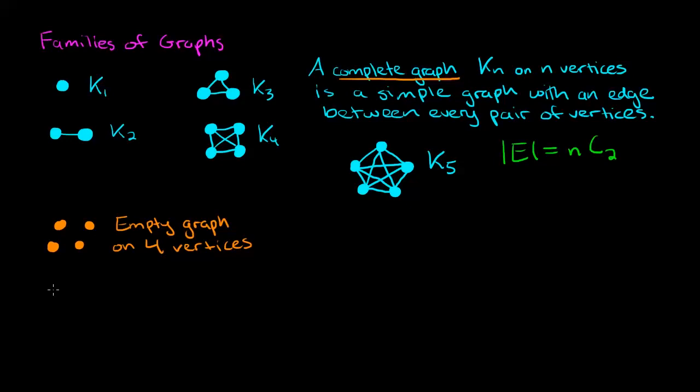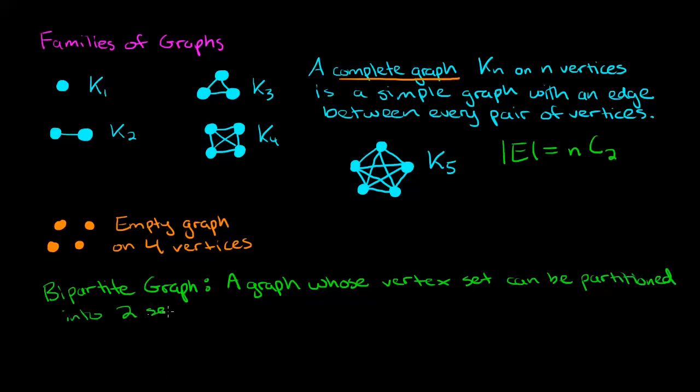Another extremely important category of graphs is the idea of a bipartite graph. It is defined to be a graph whose vertex set can be partitioned into two sets, I'll call them V1 and V2, such that every edge uv in the edge set has one vertex u in one of the partite sets V1 and the other vertex v in the other partite set V2.